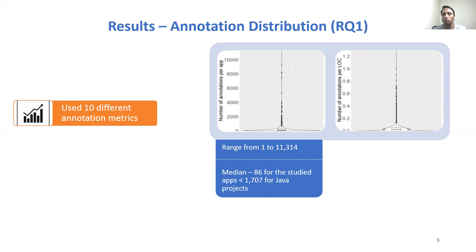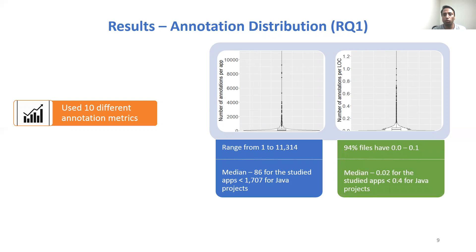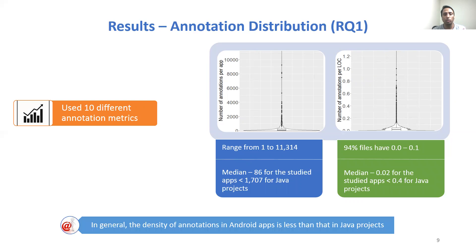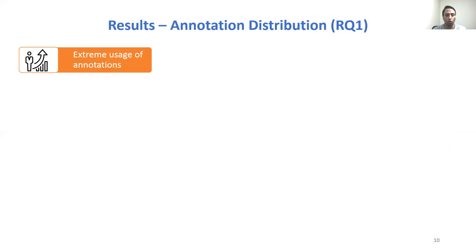For number of annotations per line of code, we found that 94% of files have a value between 0.0 and 0.1, where 0.1 indicates one line in ten uses annotations. The median value is 0.02, again much less than the median of 0.4 for Java projects. Calculating all 10 annotation metrics, we found that in general, the density of annotations in Android apps is less than that in Java projects. However, we also found some extreme uses of annotations.